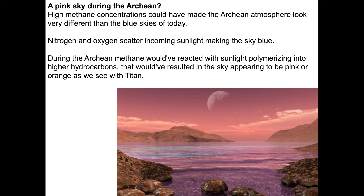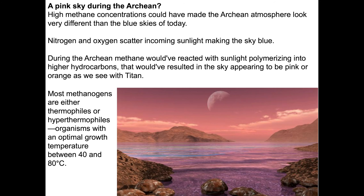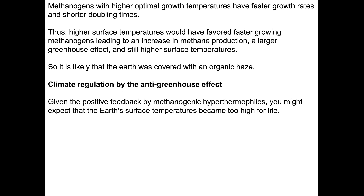The high methane concentrations would have made the Archean atmosphere look completely different from today. Our blue sky — generated by nitrogen and oxygen scattering incoming sunlight — would be gone. During the Archean, methane would have reacted with sunlight, polymerizing into higher hydrocarbons and PAHs, resulting in the sky appearing pink or orange, as we see with images of Titan. Most methanogens are either thermophiles or hyperthermophiles, with optimal growth temperatures between 40 and 80 degrees centigrade — this lines up in favor of methane being an important component of early Earth's atmosphere.